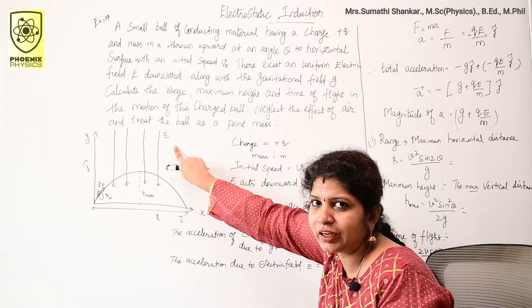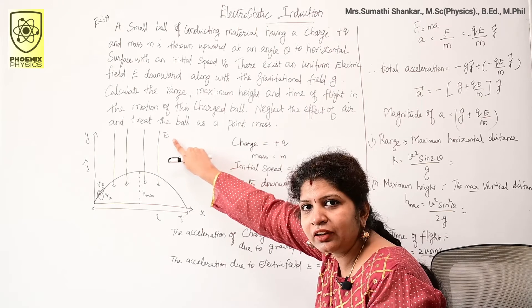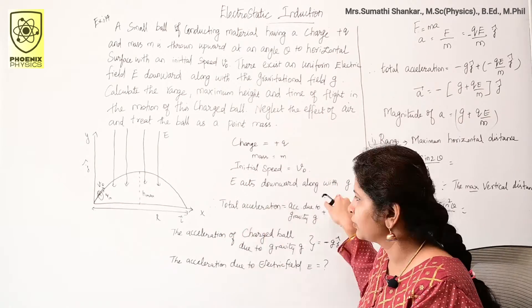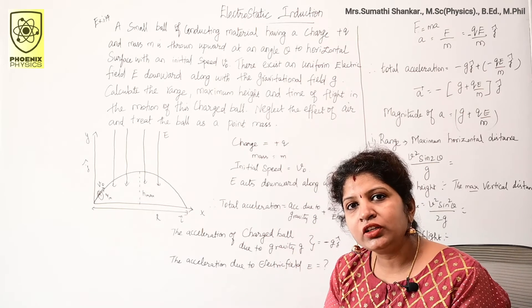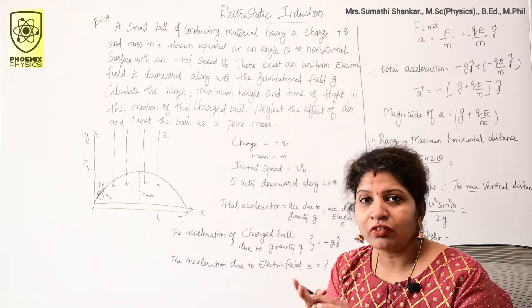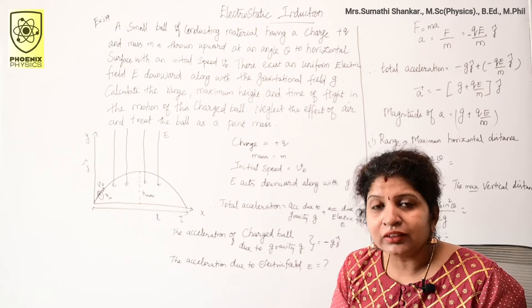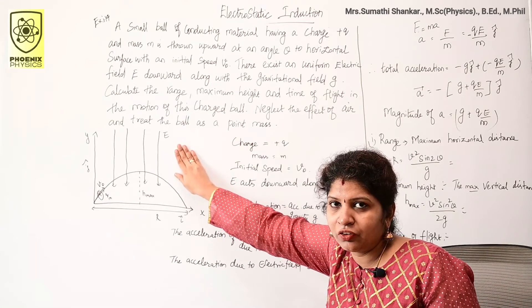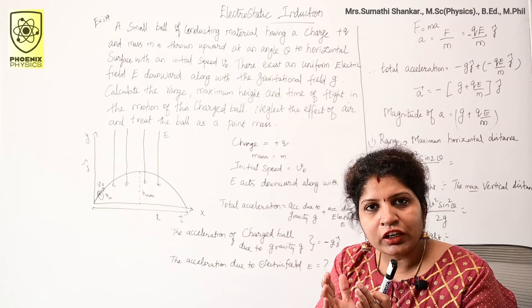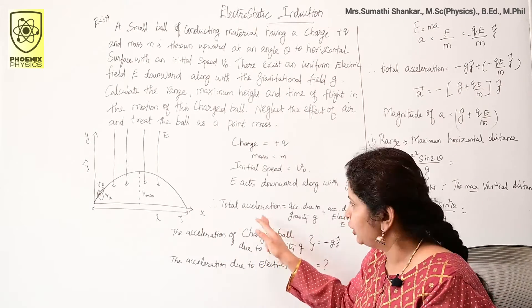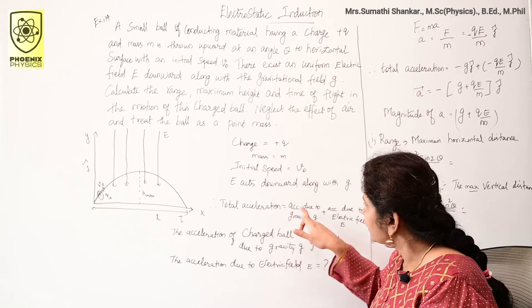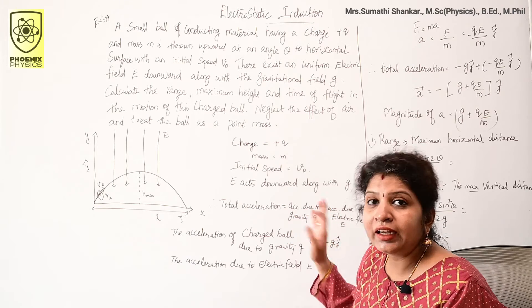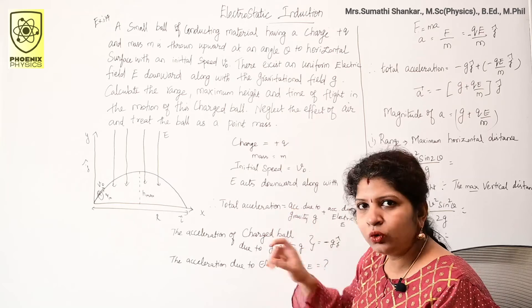The uniform electric field acts downwards along with the gravitational field. To find the total acceleration, we have two kinds of acceleration: one due to Earth's gravitational field, and another due to the uniform electric field. Simply add these two to get the total acceleration. The total acceleration equals the acceleration due to gravity g plus the acceleration due to the electric field E.